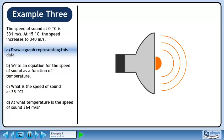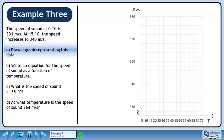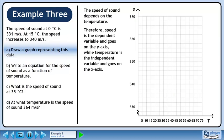In Part A, we will draw a graph representing this data. The speed of sound depends on the temperature. Therefore, speed is the dependent variable and goes on the y-axis, while temperature is the independent variable and goes on the x-axis.